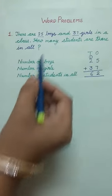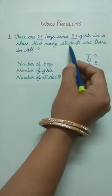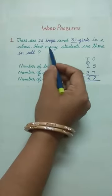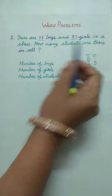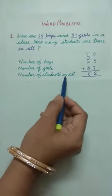And then rest of the line we can write as it is: number of students are there in all. So here, number of students in all.